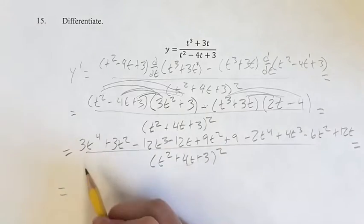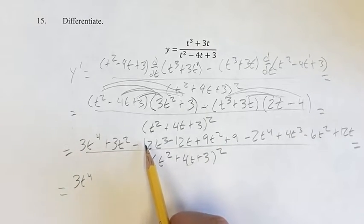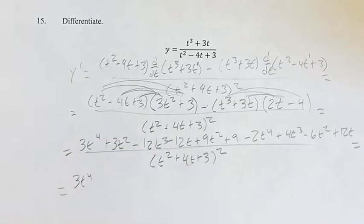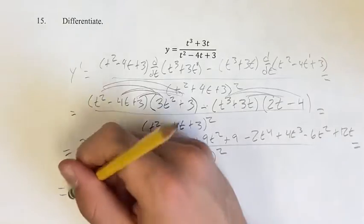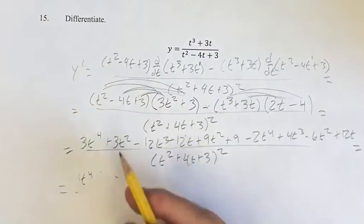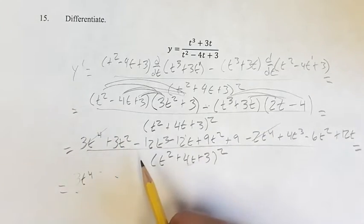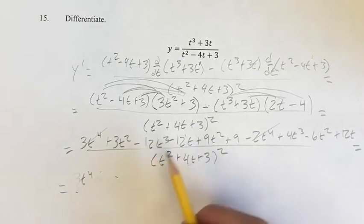So, combining like terms up here, we have 3t to the 4th on its own. Actually no, not 3t to the 4th on its own, because we have minus 2t to the 4th, so combining like terms, we have 3 minus 2, which is just going to be 1t to the 4th. Just cross these off, so we know we counted them. Then we have minus 12t cubed, plus 4.